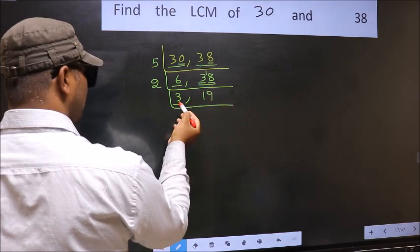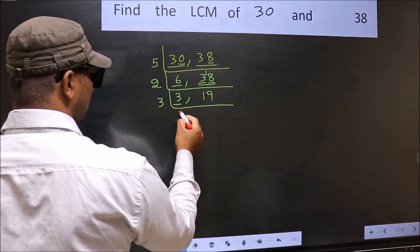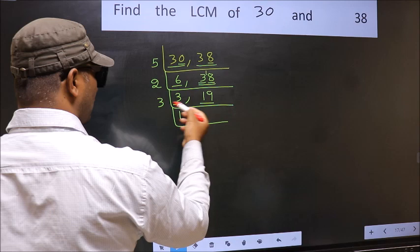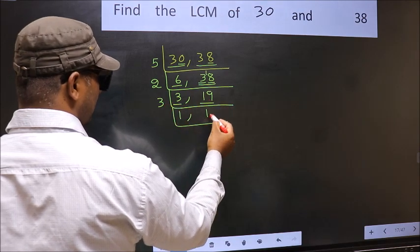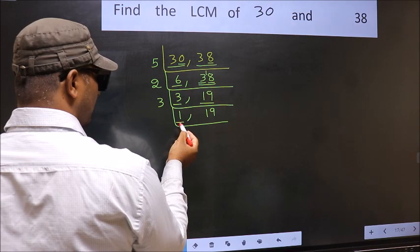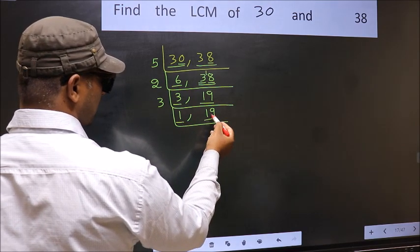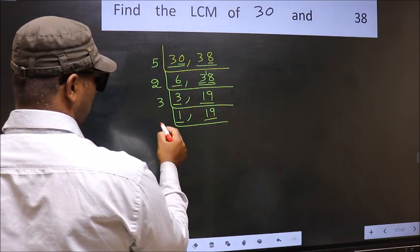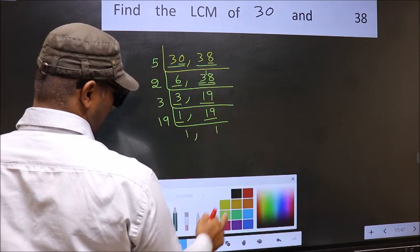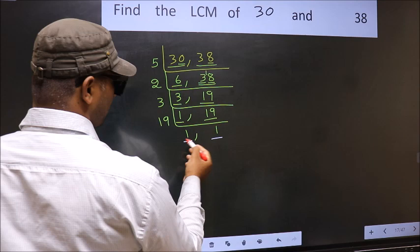Now here we have 3. 3 is a prime number, so 3 once is 3. The other number 19 is not divisible by 3, so we write it down as it is. Now we got 1 here, so focus on the other number 19. 19 is a prime number, so 19 once is 19. So we got 1 in both places.